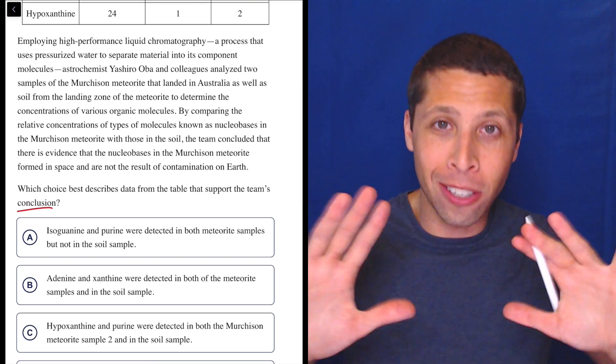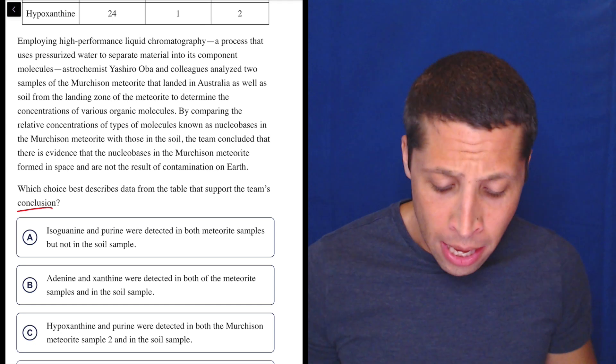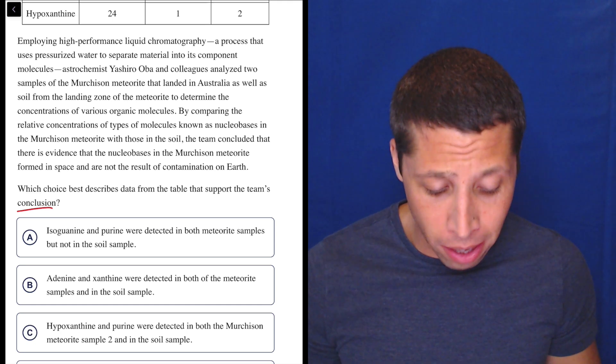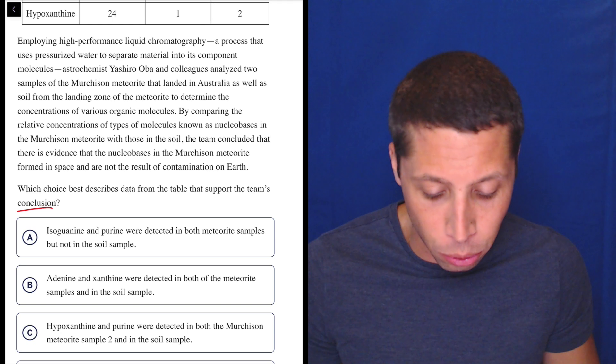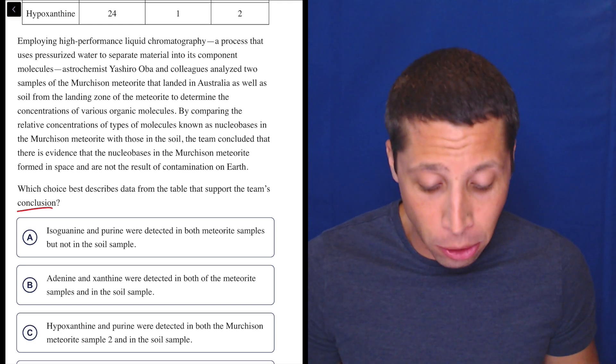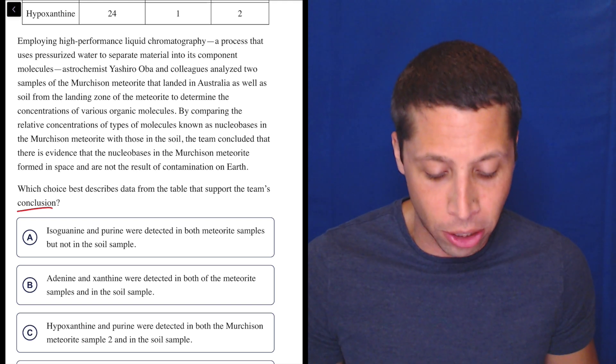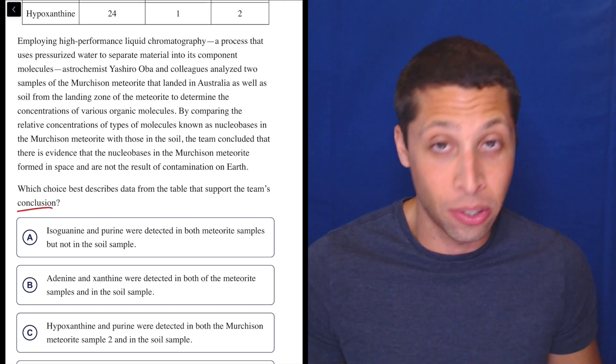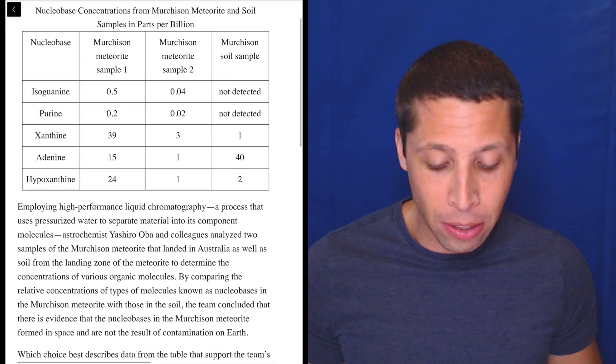Try not to get all discombobulated by the science. It's probably not about that. Employing high-performance liquid chromatography, a process that uses pressurized water to separate material into its component molecules, astrochemist Yoshiro Oba and colleagues analyzed two samples of the Murchison meteorite that landed in Australia, as well as soil from the landing zone of the meteorite to determine the concentrations of various organic molecules.